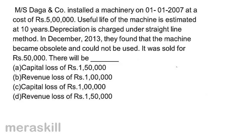Mrs. Daga and Company installed machinery on 1-1-2007 at a cost of 5,00,000. Useful life is estimated at 10 years. Depreciation is charged under the straight line method, giving 50,000 depreciation per year. In December 2013, the machine became obsolete and could not be used.